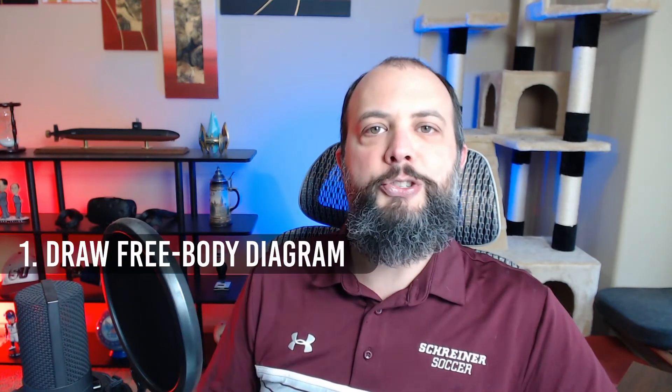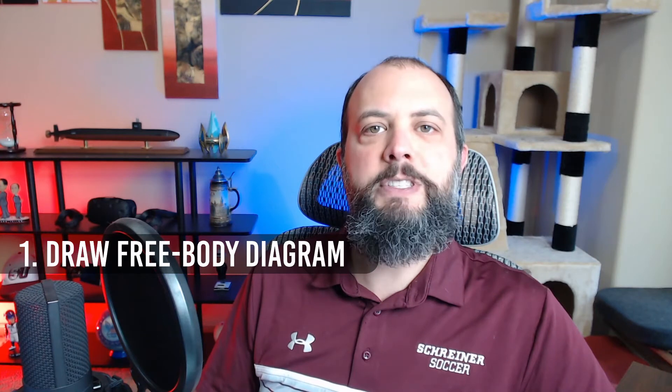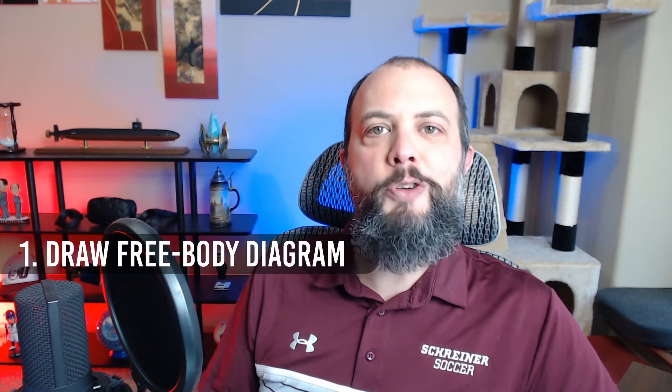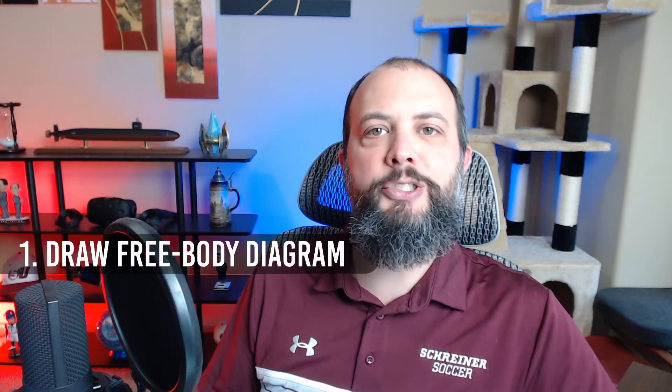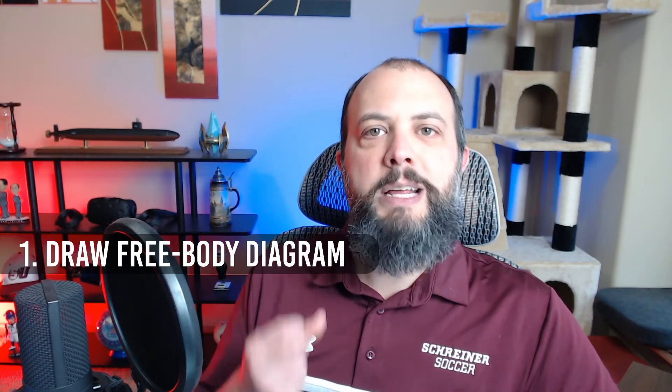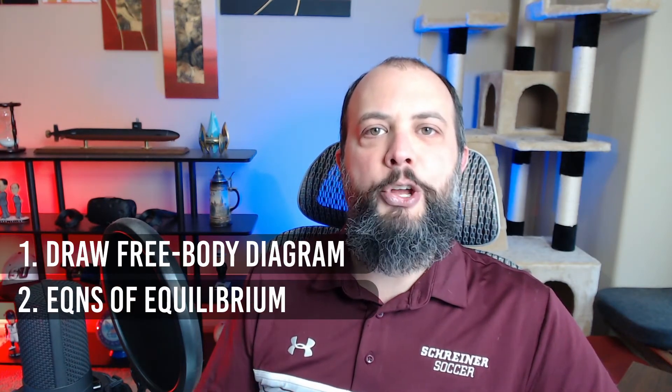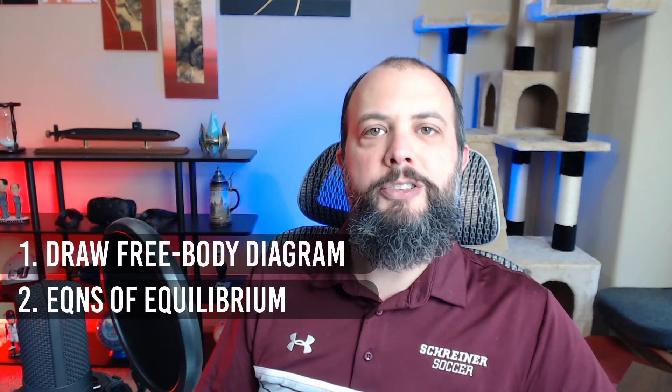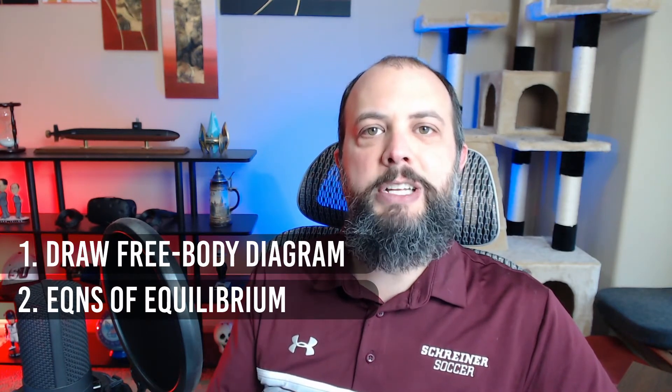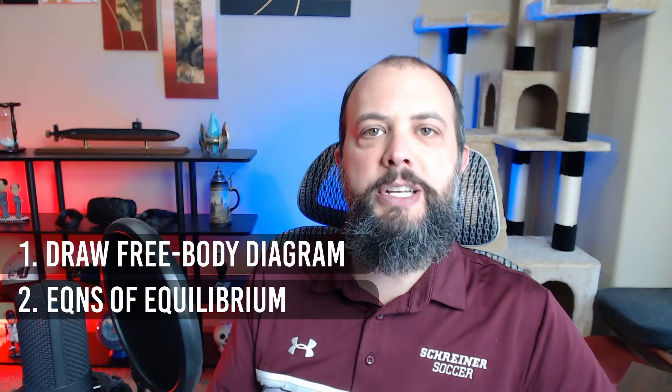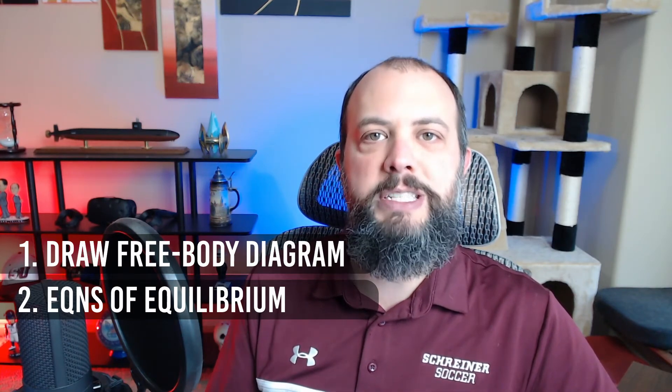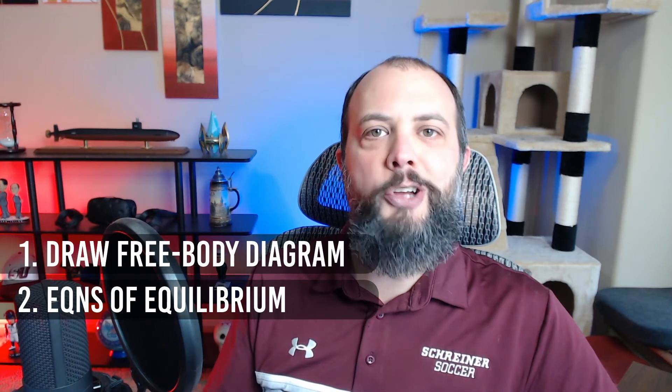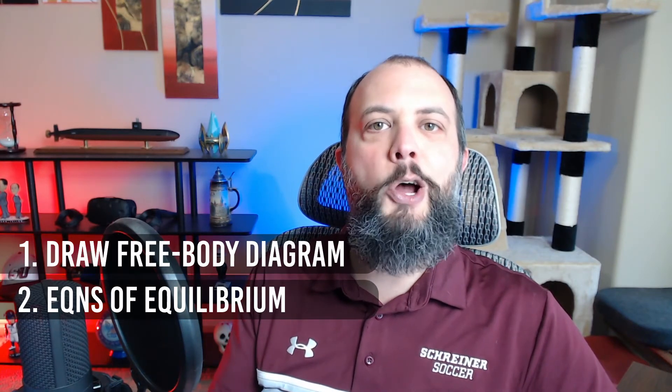Step number one is going to be to draw the free body diagram, emphasis on the word free, since you're removing the part from all of its supports and replacing those support connections with reaction forces. Step number two is going to be to write out your equations of equilibrium. This is your sum of forces in the x direction equals zero, sum of forces in the y direction equals zero, and sum of moments about any point you choose will also equal zero. And these three equations are why you can only have up to three unknowns per problem.